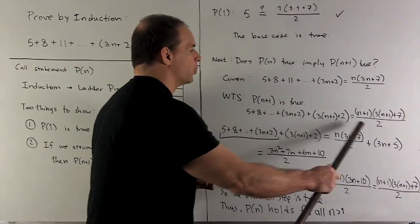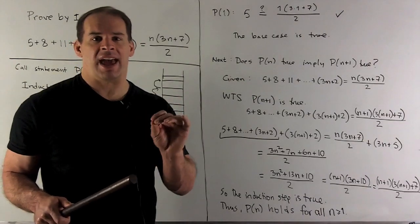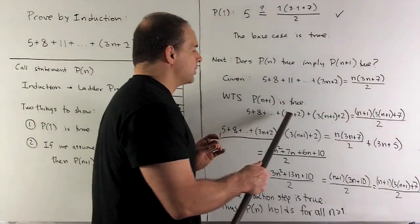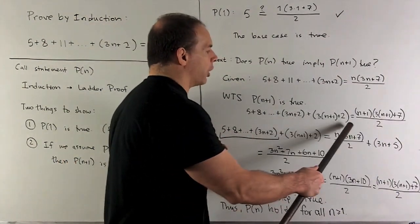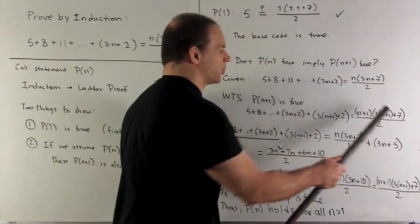So I write out P(n+1). The way I'll get that is, I take a look at P(n), where I see an n, I put in an n plus one. So on the left, that's just going to be putting in one more term. Then on the right, wherever I saw an n here, we put in n plus one.